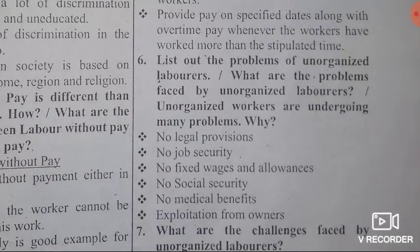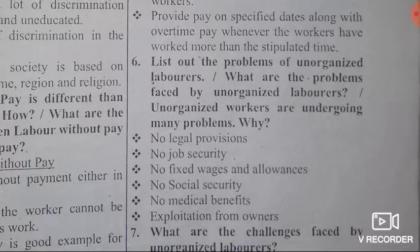A very important question: List out the problems of unorganized laborers. What are the problems faced by unorganized laborers? The answer: no legal provisions, no job security, no fixed wages or allowances, no social security, no medical benefits, and exploitation from owners. These are the problems of unorganized laborers.